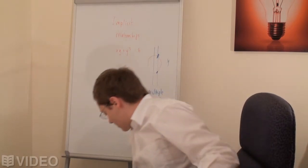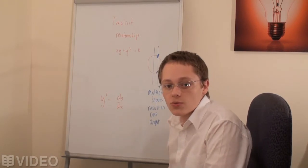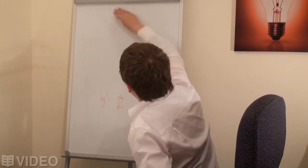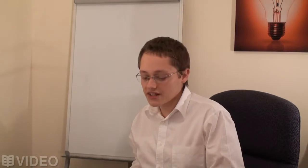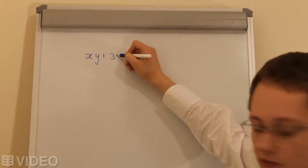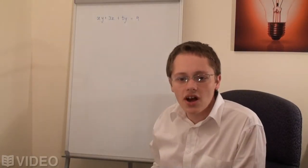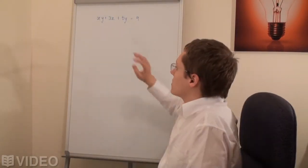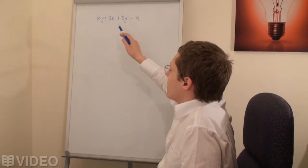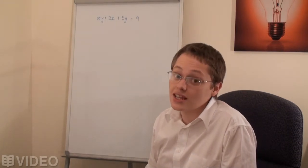So if I just clear the board, I'll set up the first example of implicit differentiation and we'll be able to learn as we go along. Let's say we have the relationship xy + 3x + 5y = 9. We have x's and y's on the same side of the equation — that is a good sign that we need to use implicit differentiation. Of course we might be able to rearrange it, but given the multiple y values it's probably just easier to differentiate implicitly.